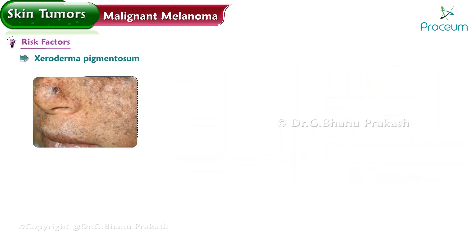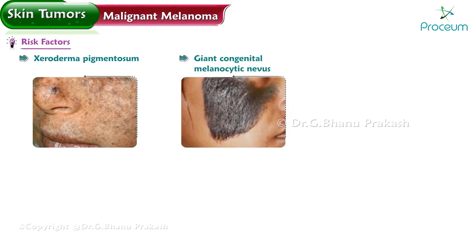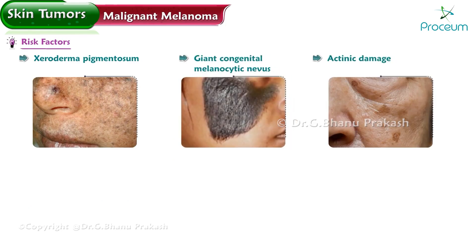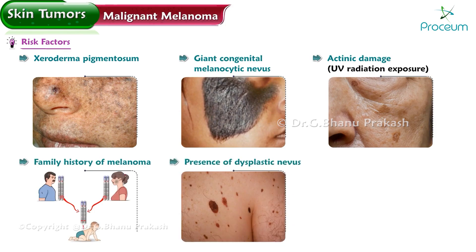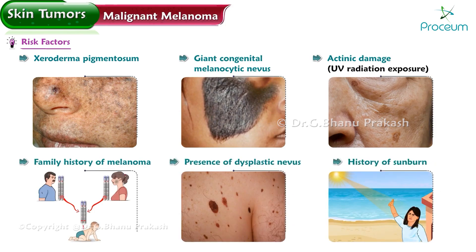Risk factors for malignant melanoma include xeroderma pigmentosum, giant congenital melanocytic nevus, actinic damage, ultraviolet radiation exposure, family history of melanoma, presence of dysplastic nevus, and history of sunburn.